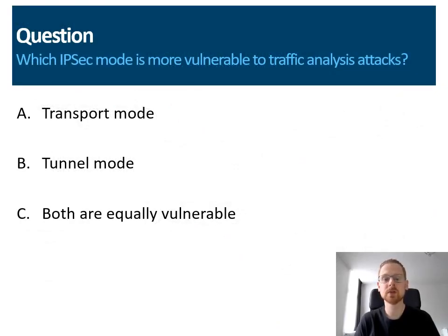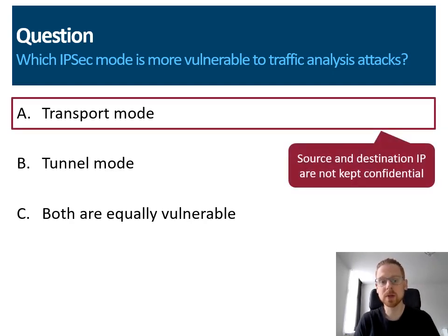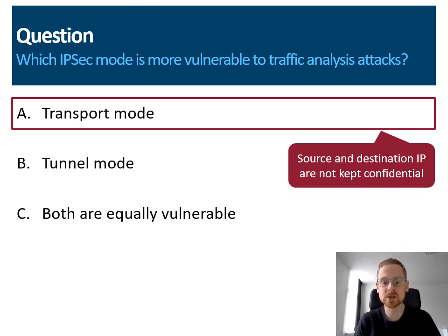I have a straightforward question related to this: which of the two IPsec modes is more vulnerable to traffic analysis attacks? Recall that this is a type of passive attack where an attacker tries to derive information about the traffic being transmitted. Is it transport mode, tunnel mode, or both equally vulnerable? The correct answer is transport mode is more vulnerable. In transport mode, the original source and destination IP addresses are not encrypted, so they are readable to anyone who intercepts the traffic. In tunnel mode, the original source and destination IP are encrypted and therefore cannot be read by a malicious user that intercepts the traffic.